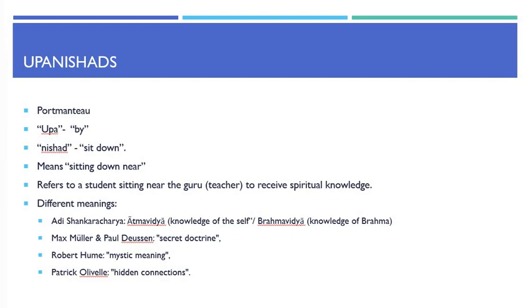Different authors throughout history have attributed different meanings to the word as it appears in many Vedas. Adi Shankaracharya says the word means Atmavidya, that is knowledge of the self, or Brahmavidya, knowledge of Brahman. Max Müller and Paul Dusen translate Upanishad as 'secret doctrine.' Robert Hume translates it as 'mystic meaning' and Patrick Olywell translates it as 'hidden connections.'